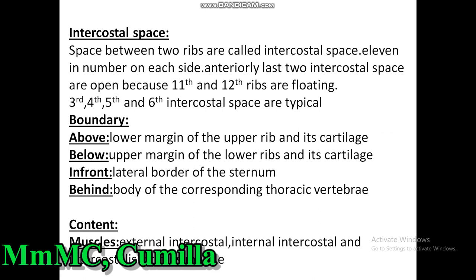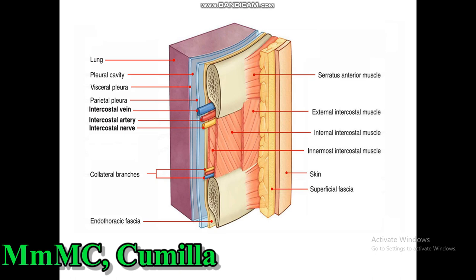The spaces between two ribs are called intercostal spaces. They are 11 in number on each side. Anteriorly, the last two intercostal spaces are open because the 11th and 12th ribs are floating. The 3rd, 4th, 5th, and 6th intercostal spaces are typical. The boundary of the intercostal space is above the lower margin of the upper rib and its cartilage, below the upper margin of the lower rib and its cartilage, in front the lateral border of the sternum, and behind the body of the corresponding thoracic vertebra.